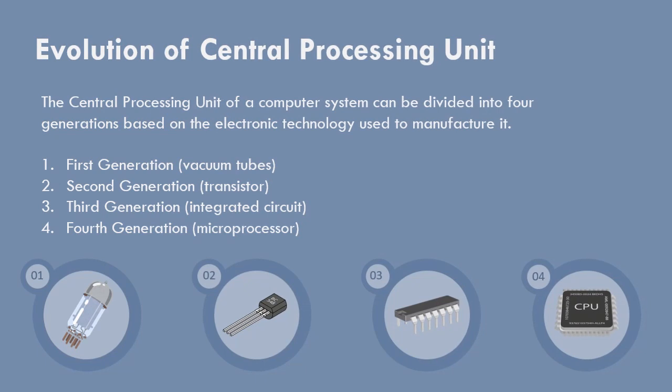Evolution of the Central Processing Unit. The Central Processing Unit of a computer system can be divided into four generations based on the electronic technology used to manufacture it: 1st generation — vacuum tubes, 2nd generation — transistor, 3rd generation — integrated circuit, and 4th generation — microprocessor.